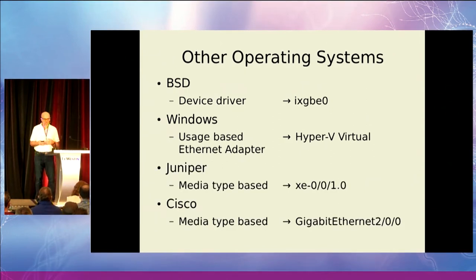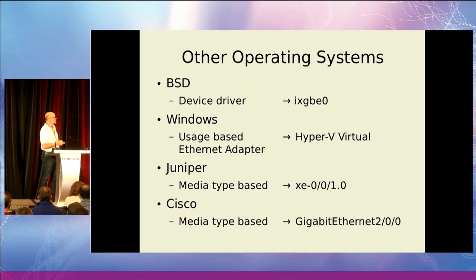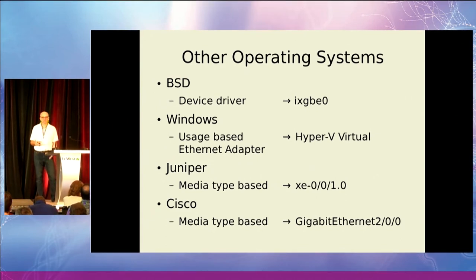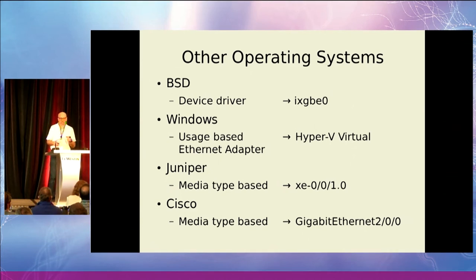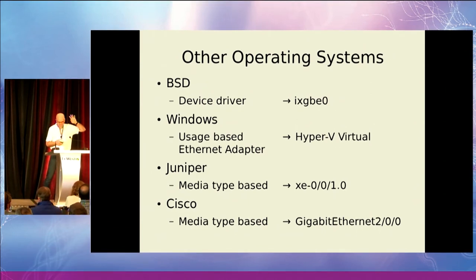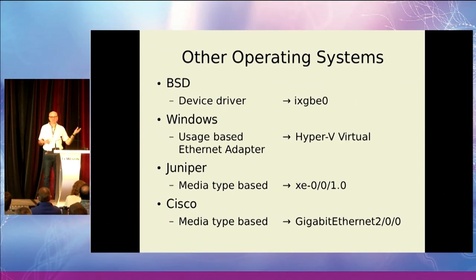Juniper and Cisco both use different things. Juniper, being a BSD-derived system, uses the hardware type plus a chassis/slot/port naming with slashes. Cisco has had Ethernet, Fast Ethernet, Gigabit Ethernet — getting longer and longer — with their own naming scheme. When I was at Vyatta, people wanted us to switch to putting slashes in the name — that was not a good idea. I bring these up because you will have customers coming from other environments with different expectations, and that's an important part.